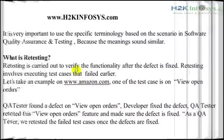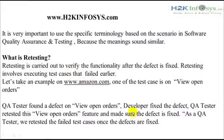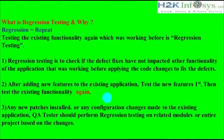After we find the defect, as a QA tester we assign that defect to the developers. The developer fixes the defect, and the tester has to retest the feature 'View Open Orders' to make sure the defect is fixed. Here we are retesting the specific feature after the defect is fixed, which had failed before.